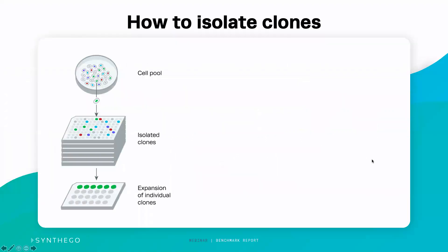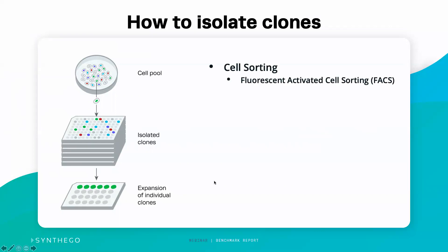So how do we actually isolate clones? We take that population of cells — the cell pool, whether it's a knockout or a knock-in — and we seed these cells into containers, usually 96 or 384-well plates, to isolate single clones. We then expand those individual clones to genotype them. One of the more common ways is using cell sorting, which can use fluorescent or non-fluorescent markers. Our favorite method is limiting dilution, where we seed the cells at a very low dilution, usually about 0.5 cells per well.